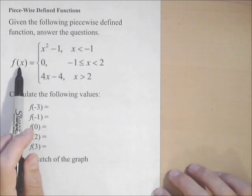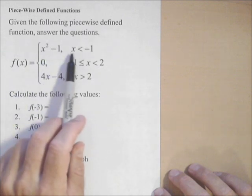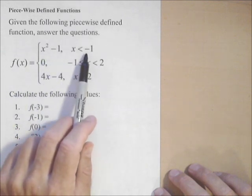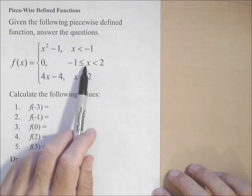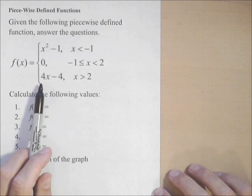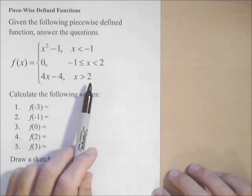So what we're reading here is that f of x is x squared minus one when x is less than negative one. It's zero when x is between negative one and two, and it's four x minus four when x is greater than two.